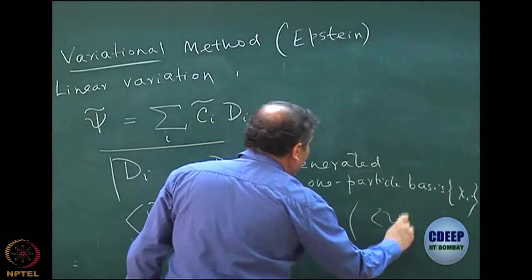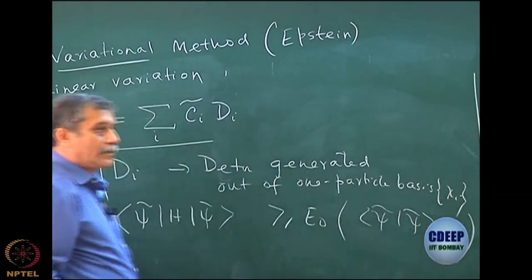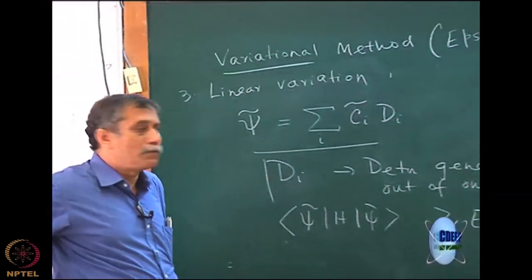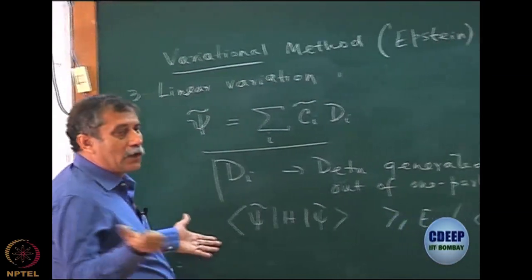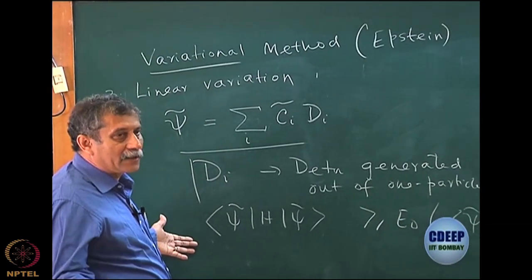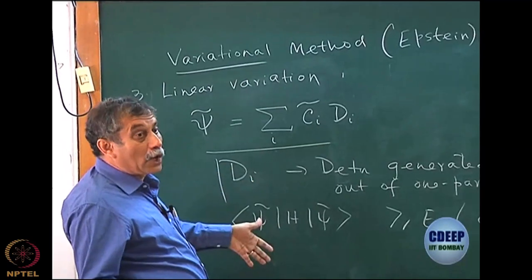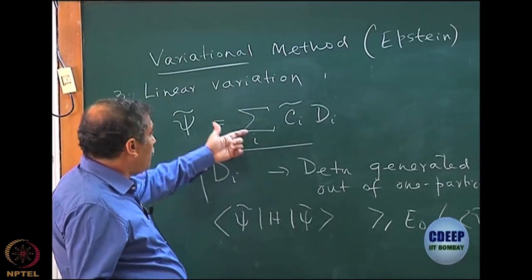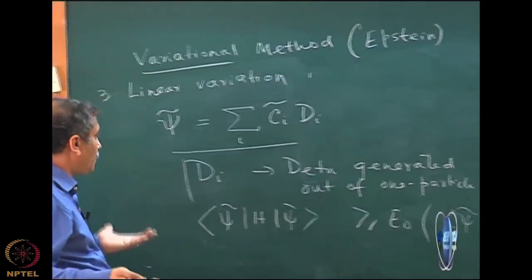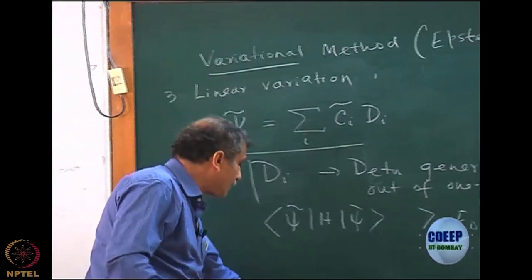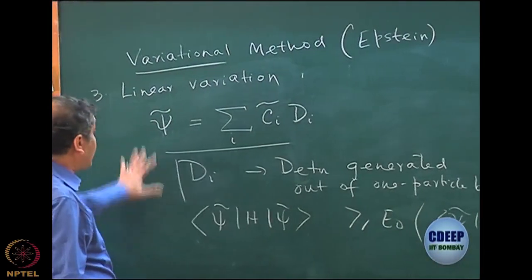Assuming psi tilde is normalized — in many of the cases for proof, we will always assume normalization, so do not worry. Theorem 2 will obviously hold good — it is greater than or equal to E_0. Theorem 1 will hold good only if the basis is complete. In case of complete basis, it will become equal; otherwise, it will become greater than the exact ground state energy.